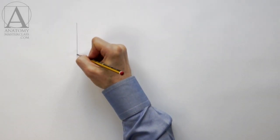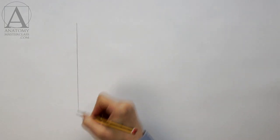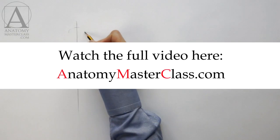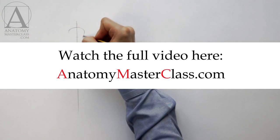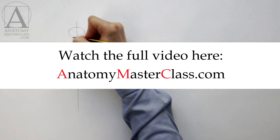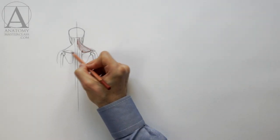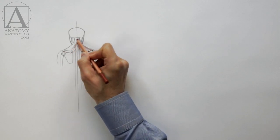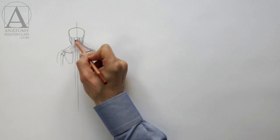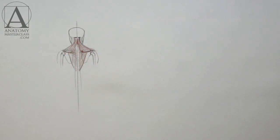Let's begin with a quick sketch of a man's torso from the rear view. The central vertical line represents the axis of symmetry of the human body. At the top, we have a rear view of the skull. The trapezium has a diamond shape with four sides and four corners. The main action of the trapezium muscle is to move the shoulder blades.